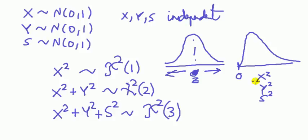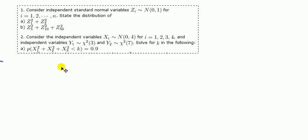This is a chi-squared distribution. Now let's turn to one of the exercises on the website. Consider the independent standard normal variables zᵢ, normally distributed with mean of zero and variance one. There are n of these zᵢ's. State the distribution of z₁-squared plus z₂-squared.